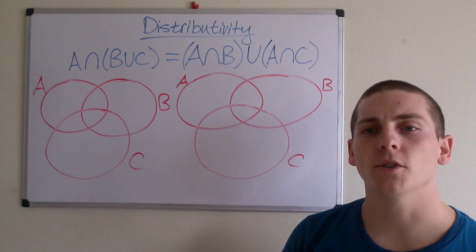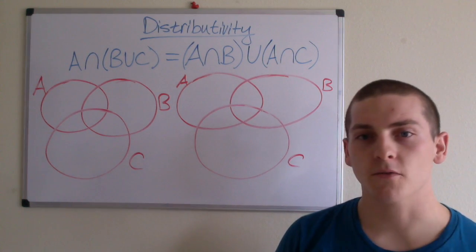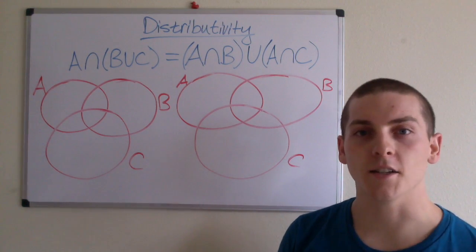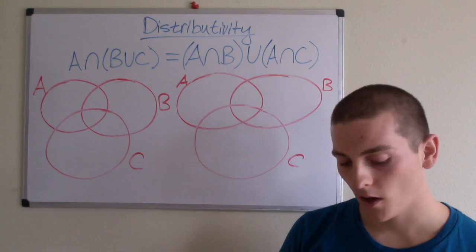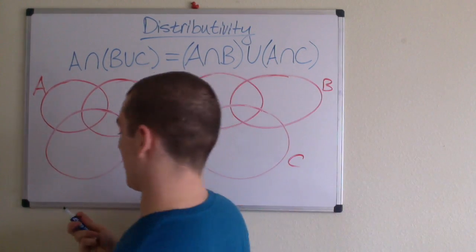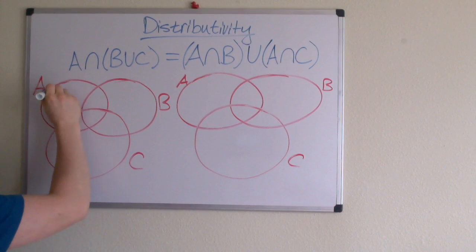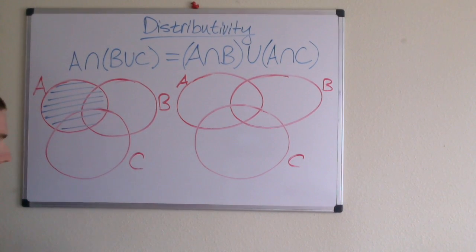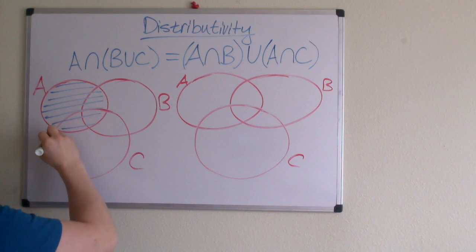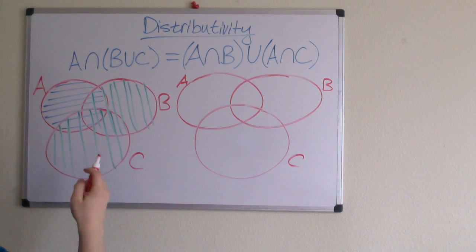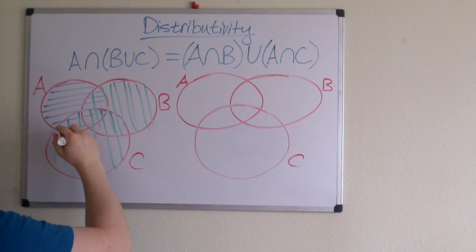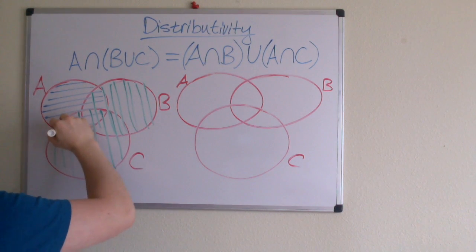I thought it might be helpful to use Venn diagrams for the conceptual idea of this, and then I'll do a separate video on the actual definition. So if we look at A here and separate it, and then decide to separate B union C, when we go to find the intersection of these two regions, it's easy to see that it is this region.